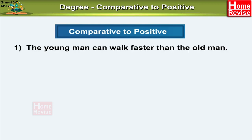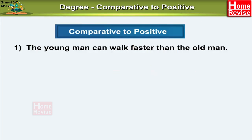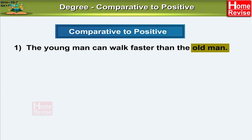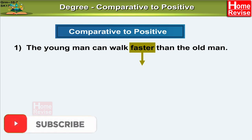The young man can walk faster than the old man. You can very clearly see that the phrase 'faster than' denotes comparative degree. This is an adverb. So the comparison is between the young man and the old man. We definitely cannot change it into a superlative degree. Hence, we are changing this comparative only to positive.